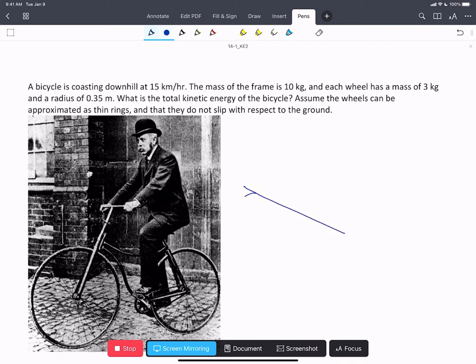In this problem, we have a bicycle that's rolling downhill. It's got two wheels and a frame that's attached to the wheels at their centers. We're asked to find the kinetic energy of the bicycle.